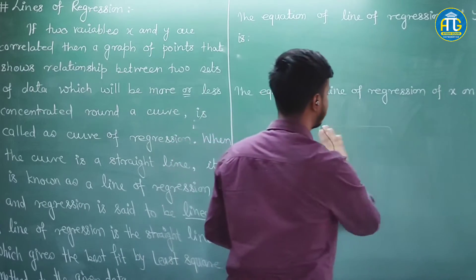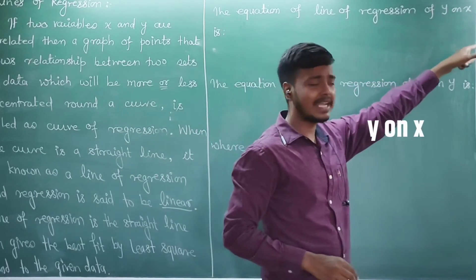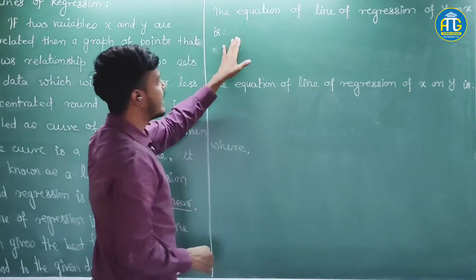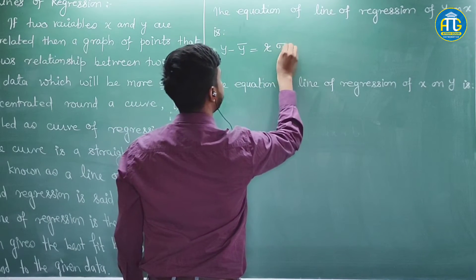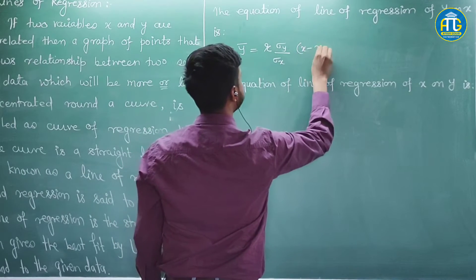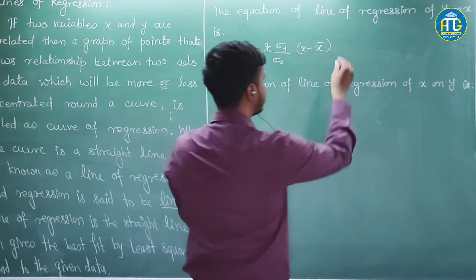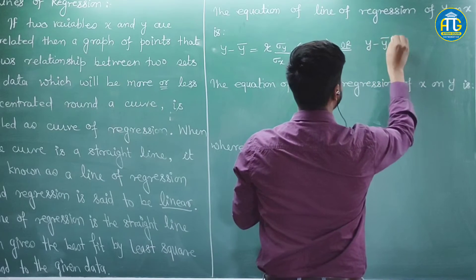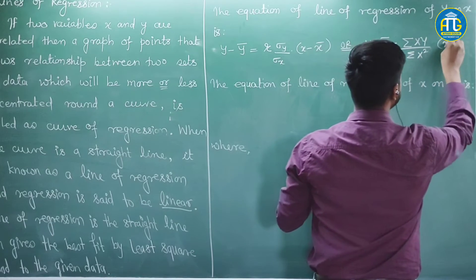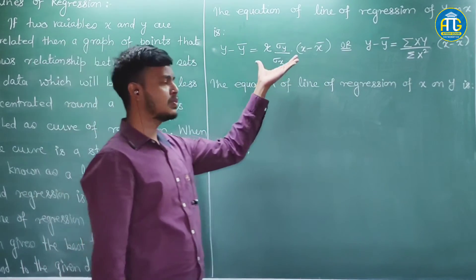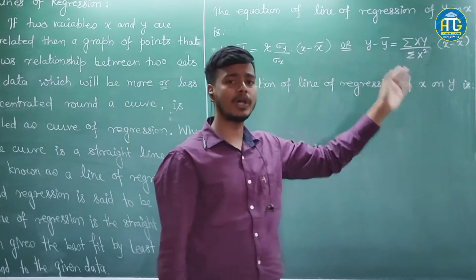Let us see the equations of lines of regression. There are two types: one is y on x and the second is x on y. The equation of line of regression of y on x is given by: y − ȳ = r·(σy/σx)·(x − x̄). This can also be written as y − ȳ = (Σxy / Σx²)·(x − x̄). Depending on the problem, we will make use of either one of these forms.